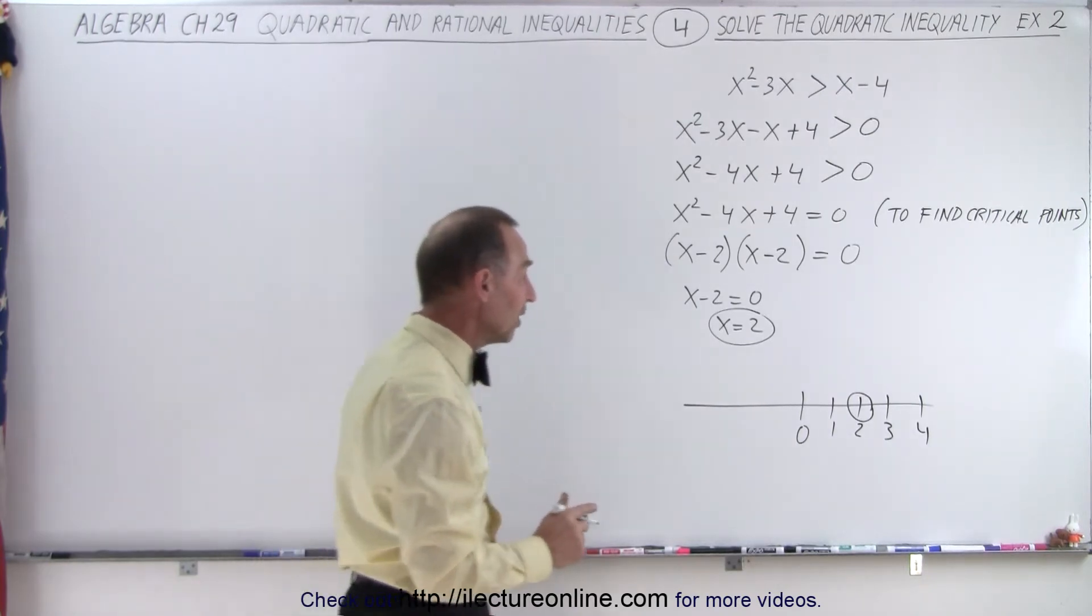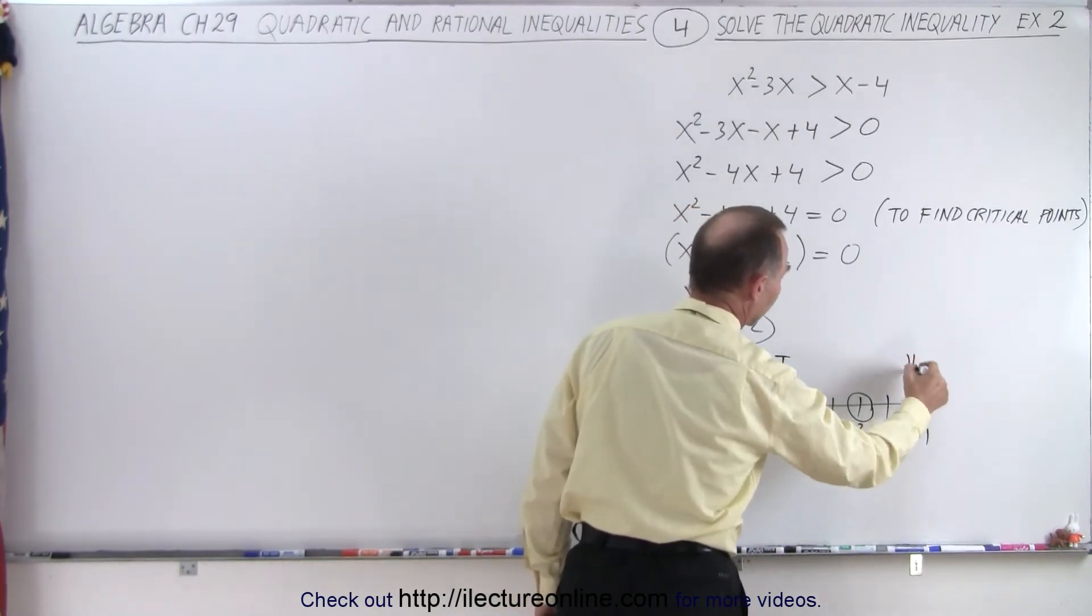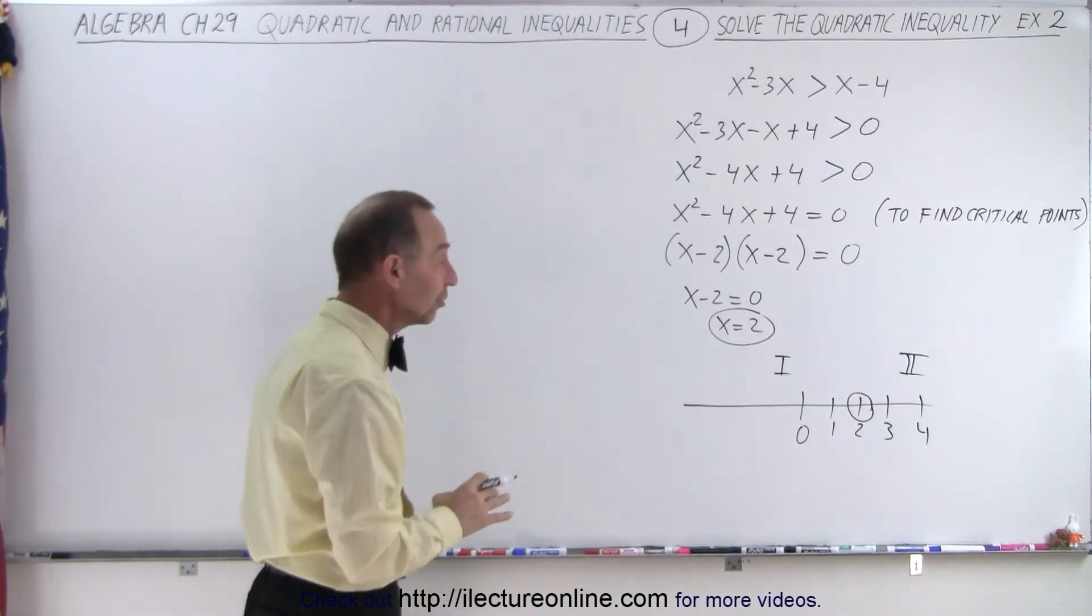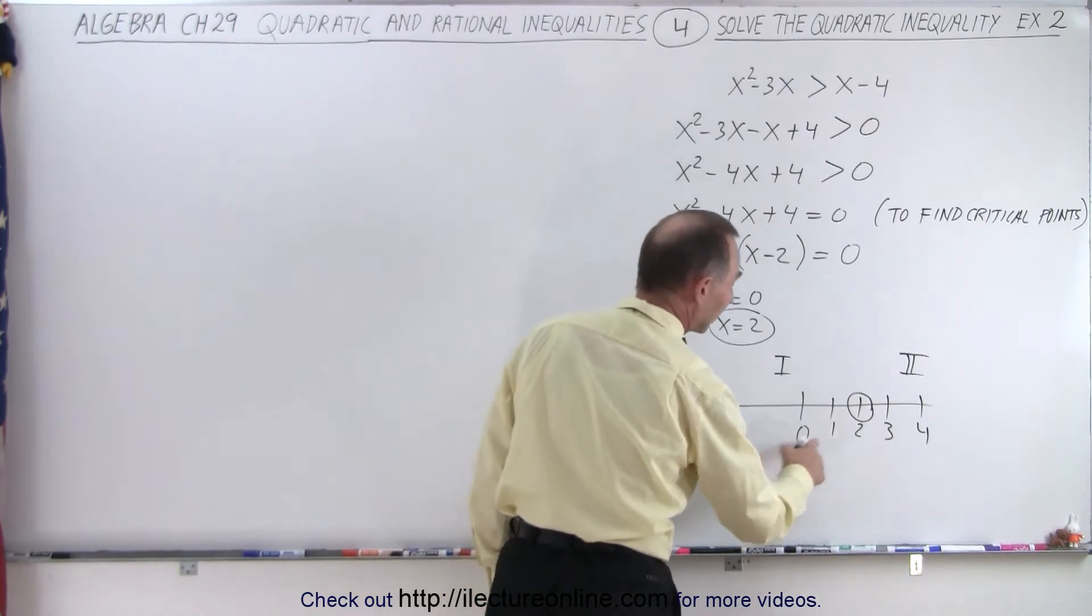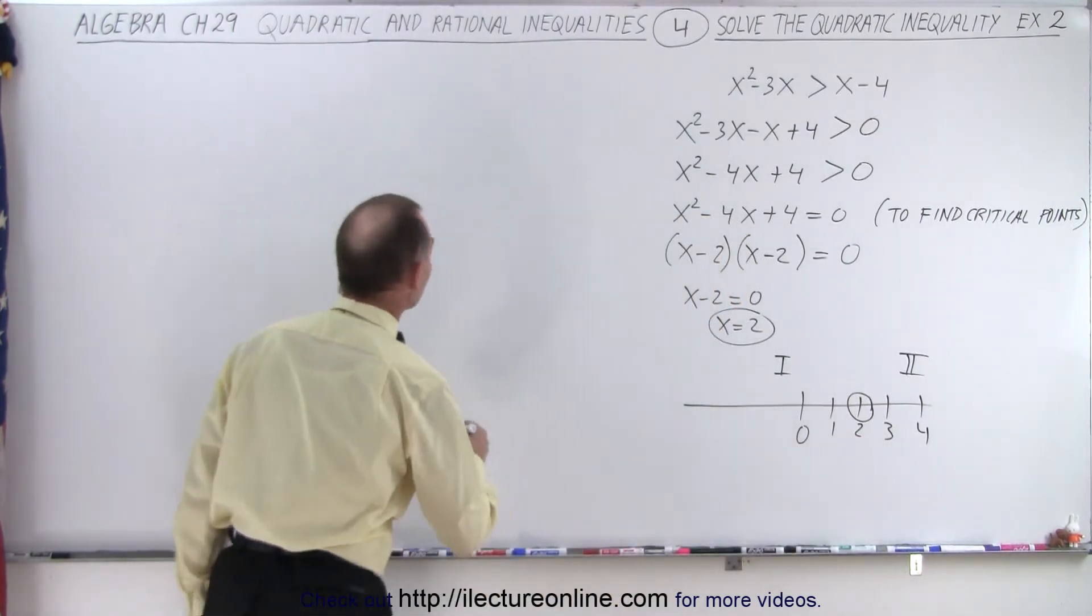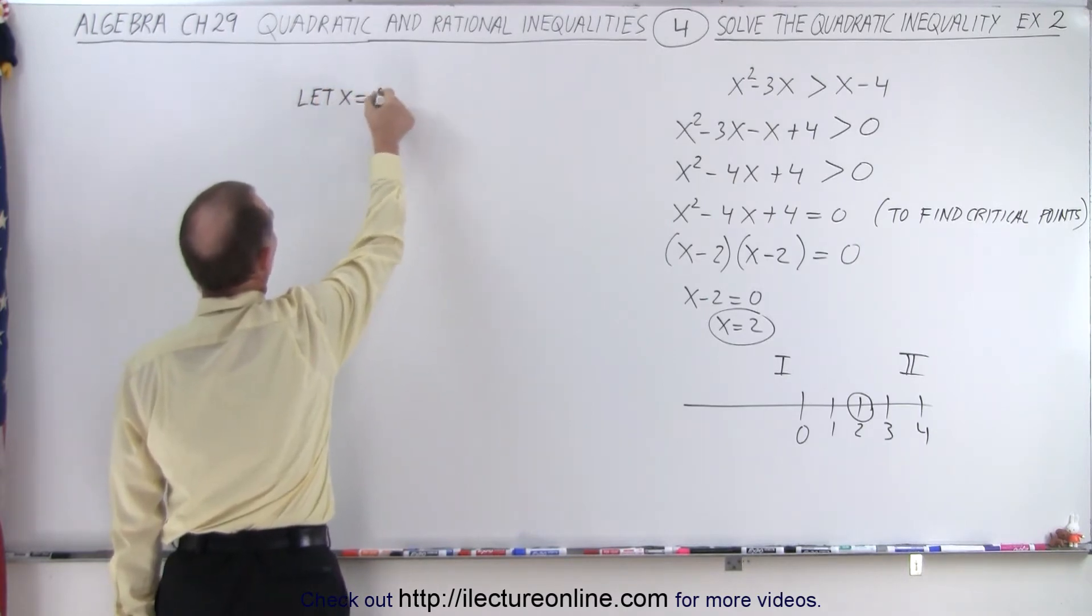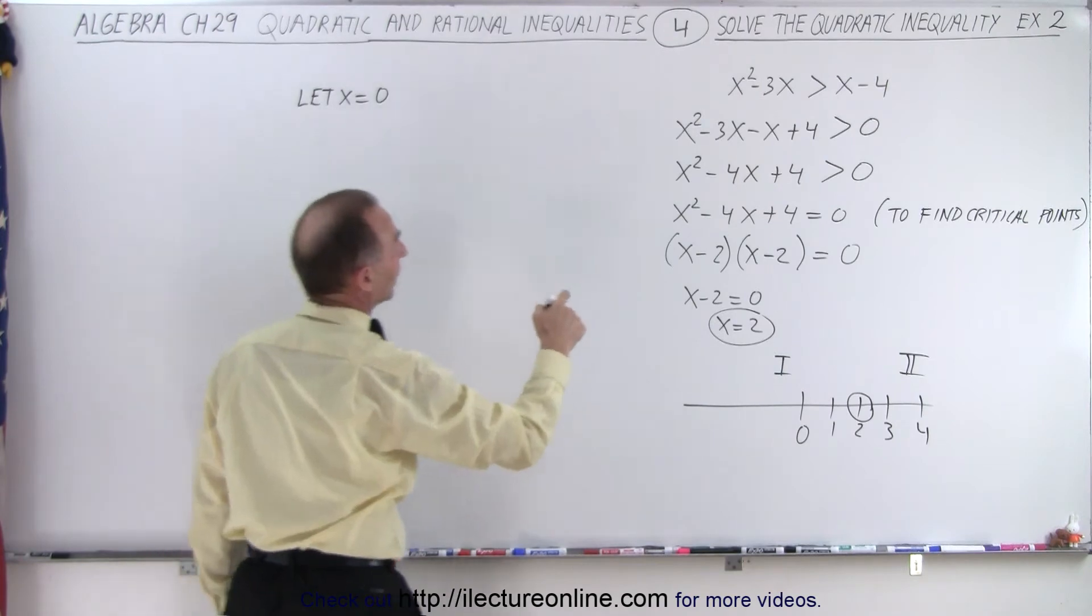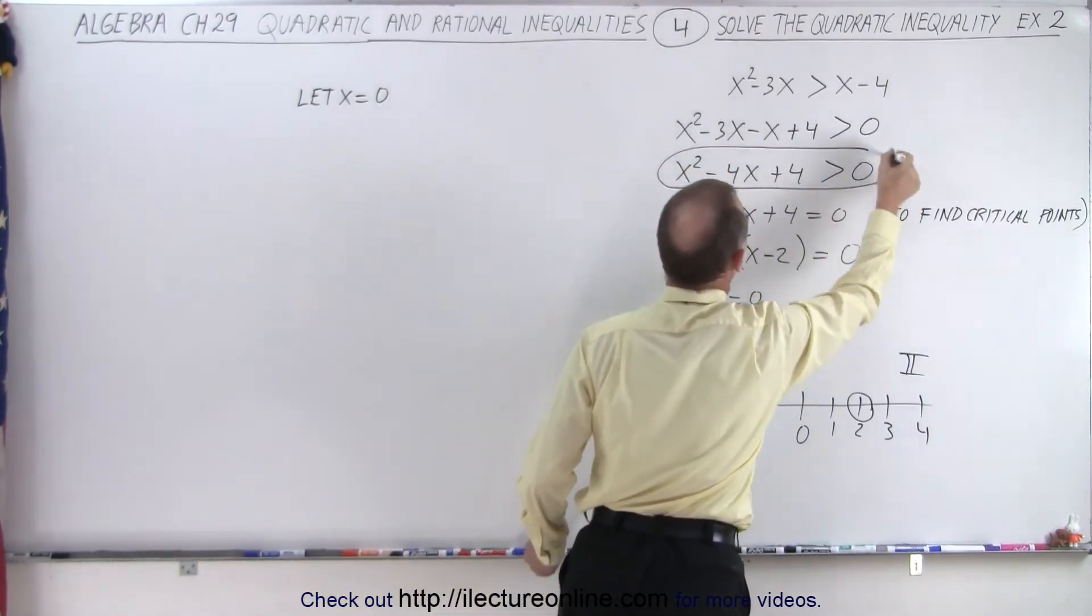Notice that we only have two regions now. We have a region to the left, let's call that region 1, and a region to the right, let's call that region 2. And now let's see which of those two regions satisfy that inequality. We pick a point on the left side and we pick a point on the right side. So let x equals 0. We'll test region number 1.